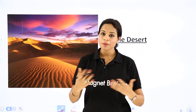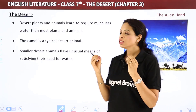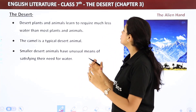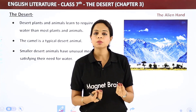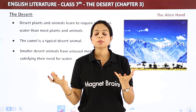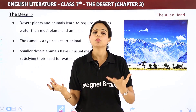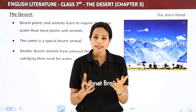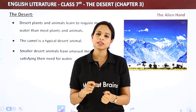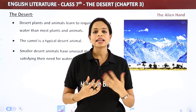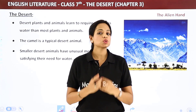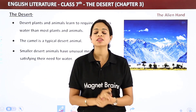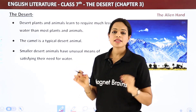Desert plants and animals learn to require much less water than most plants and animals. If you compare a rose plant with a cactus plant — rose plant requires a lot of water, you can't leave it for 4-5 days. But cactus can go a long time without much water. This is adaptation — please remember this word. The camel is a typical desert animal.